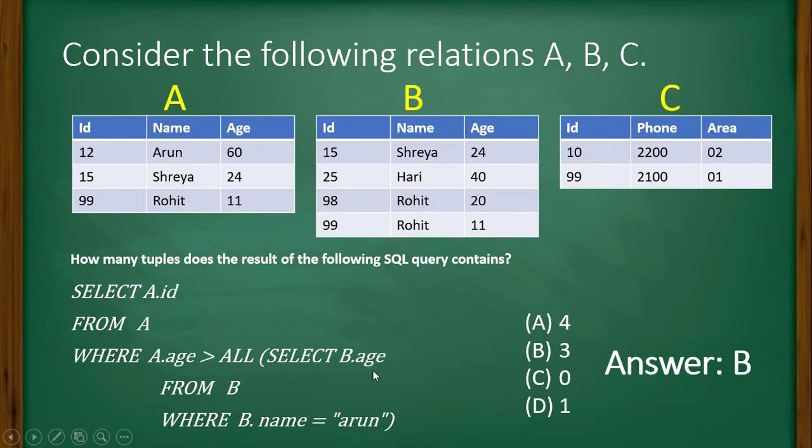The subquery in the first bracket will be executed first: SELECT B.age FROM B WHERE B.name equal to 'arun'. Now there is no name 'arun', so this part will not return anything from table B. So it will be treated as null. Here ALL means everything is selected, so this part becomes null. So this condition WHERE A.age is greater than null, what will happen? SELECT A.id FROM A WHERE A.age is greater than null. All three will be selected, so the result will be three. Three records will be selected.